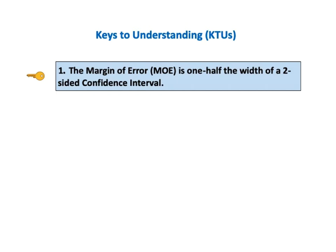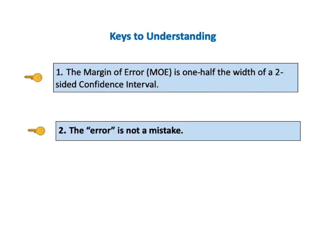The first key says the margin of error, MOE, is one half the width of a two-sided confidence interval. KTU number two says the quote, error, is not a mistake.